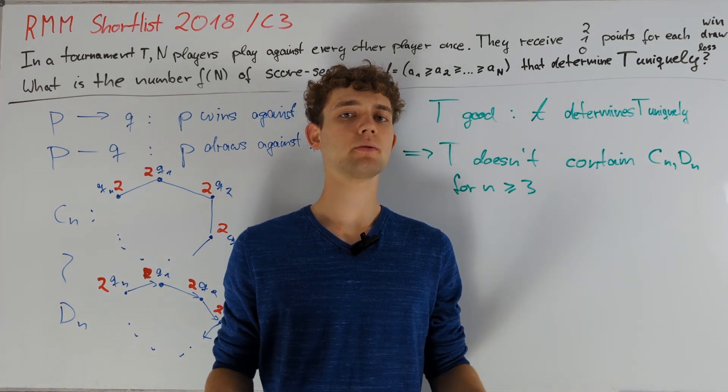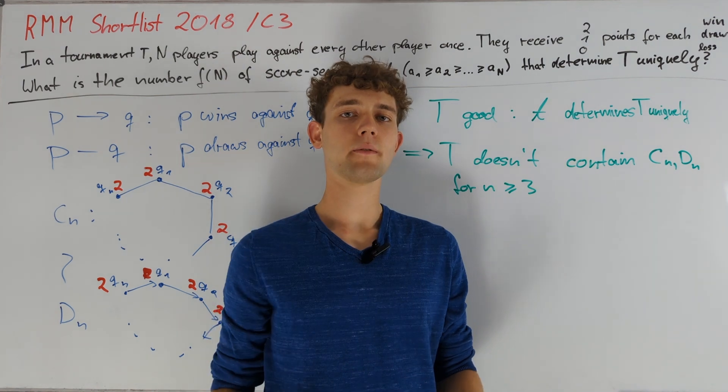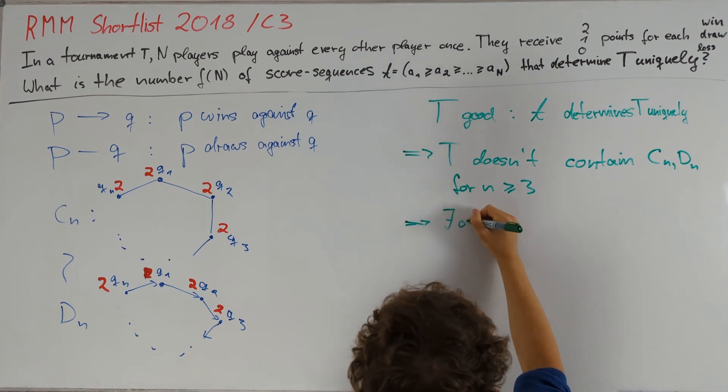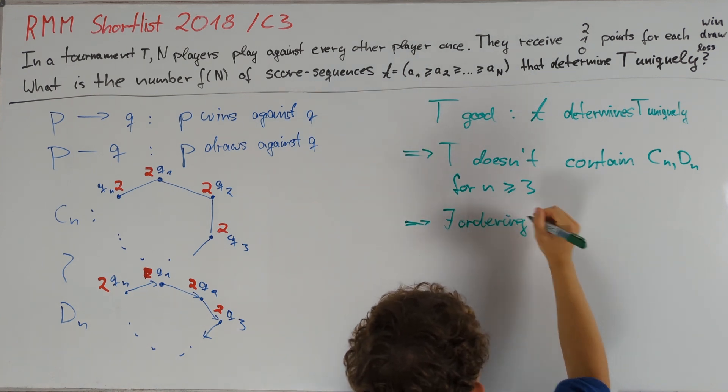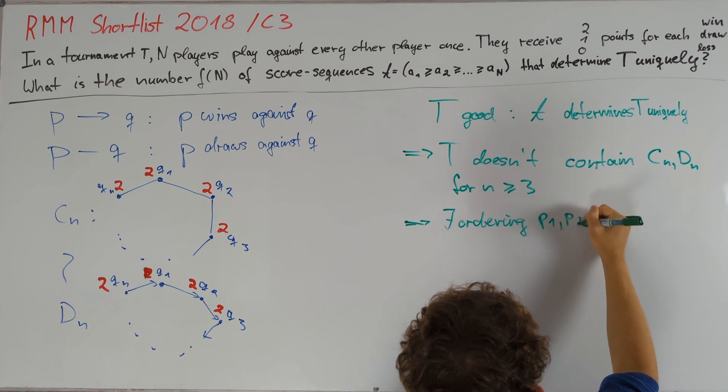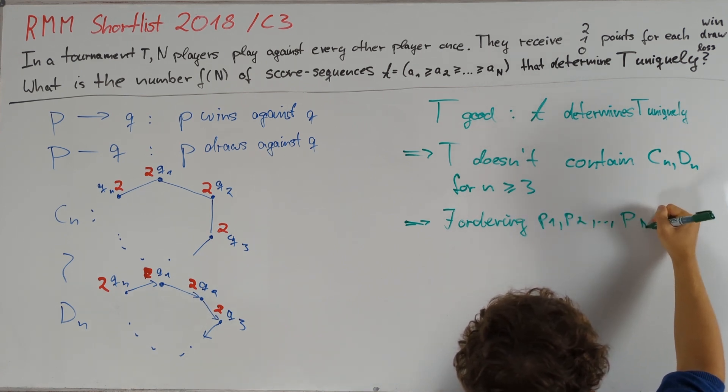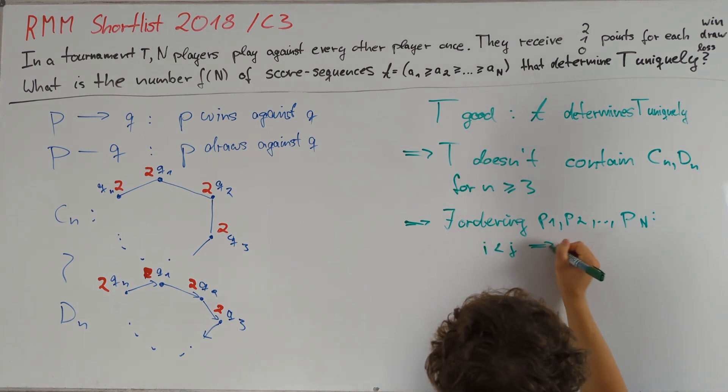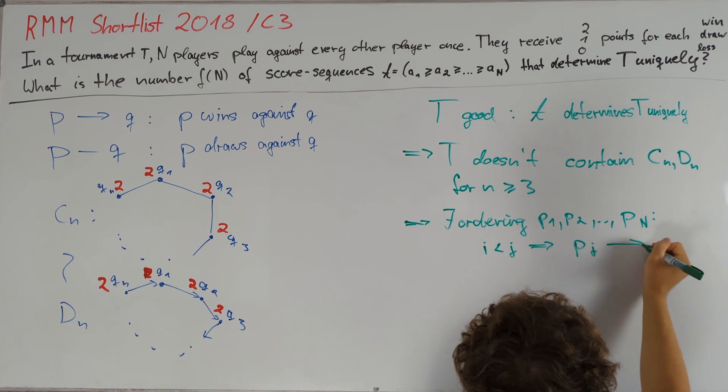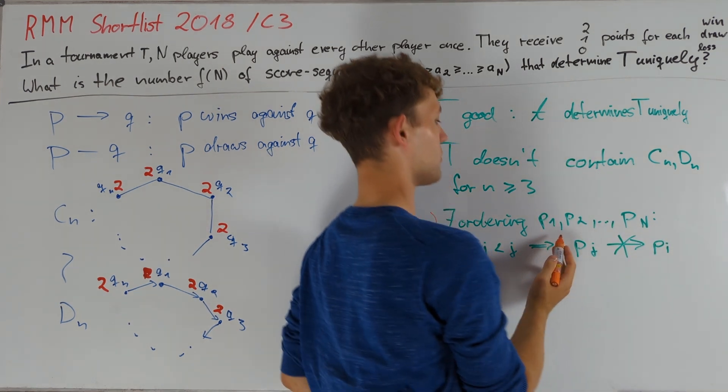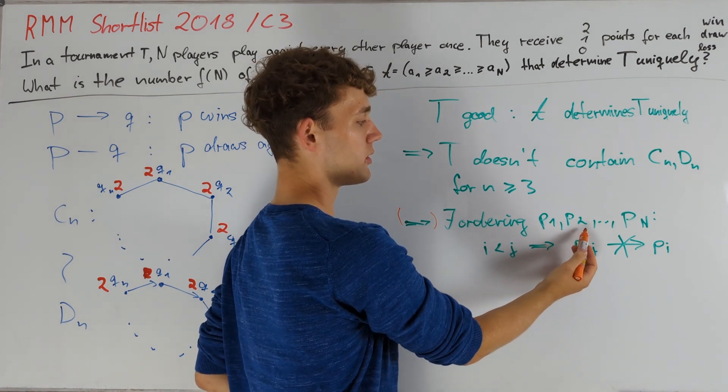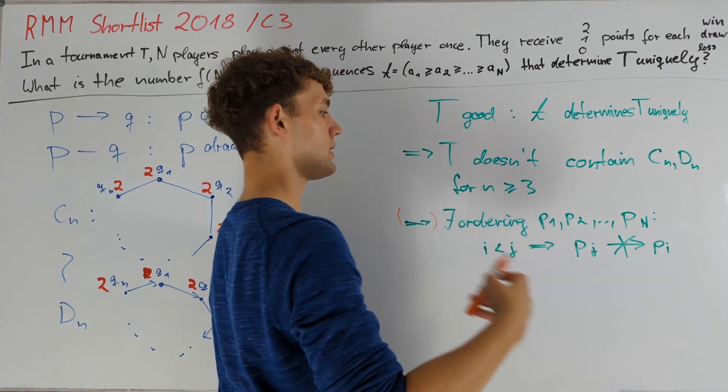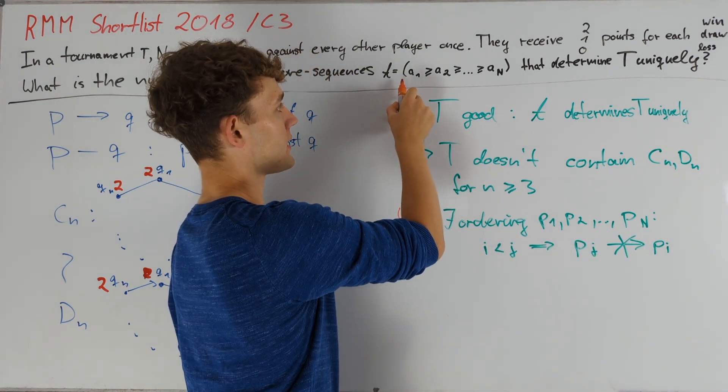Now we need to show a quick lemma that will be quite intuitive once we have seen it for the first time. Namely the fact that T doesn't contain a directed cycle implies that we can order the players in the tournament in the following way. So we write them as P1, P2 up to P capital N in such a way that if i is less than j, then Pj doesn't win against Pi. So basically P1 wins or draws all of his matches, P2 loses at most to P1, and so on. As a quick intuition, this looks like it might already be the ordering of the players corresponding to this descending score sequence.